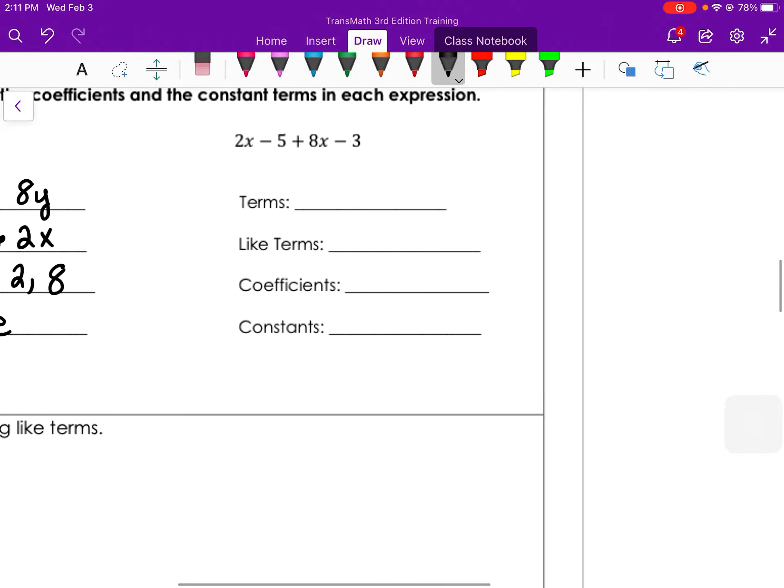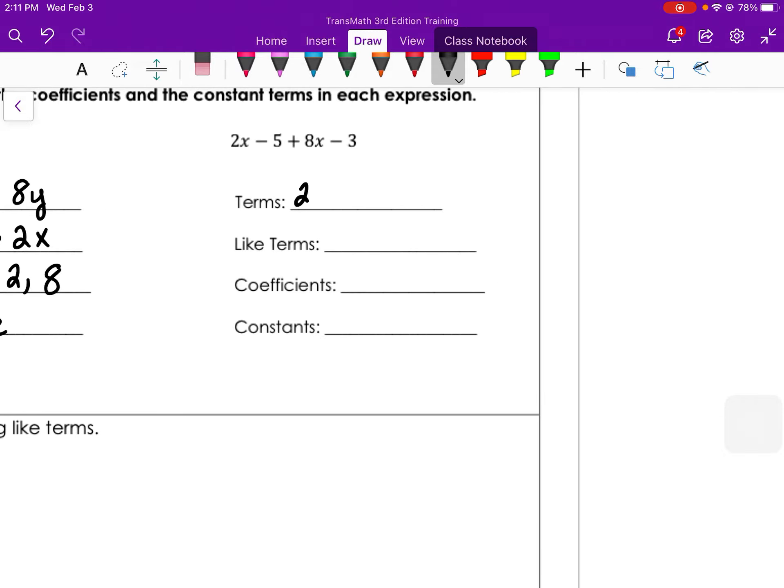In the second example, there are four terms. The terms are 2x, negative 5, 8x, and negative 3. You could rewrite this as 2x plus negative 5 plus 8x plus negative 3. And then you can clearly see the terms. Four terms in this expression.